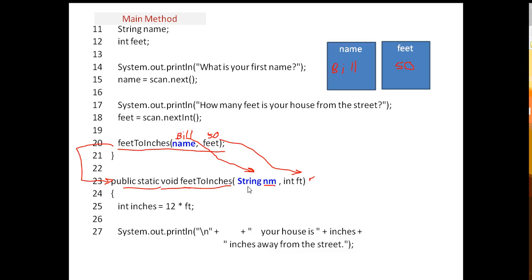So we're declaring a new variable that's a string, and these are called parameter variables. And then another variable is declared called ft for feet, and so bill, or the nm is going to catch the value bill,